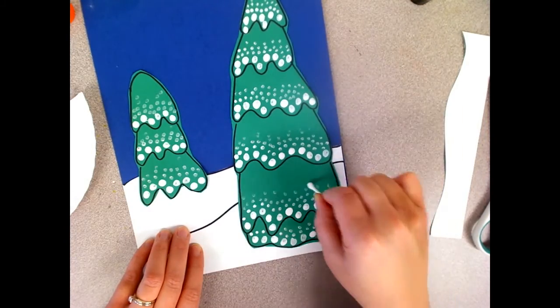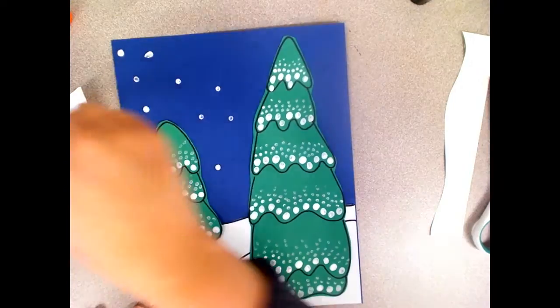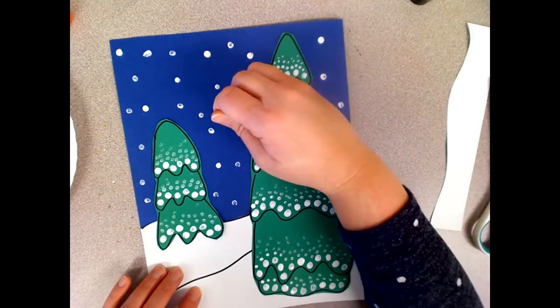You can always go back and add more to other parts of your trees. When you're finished add some snowflakes to the sky as well and if you want to make some of those snowflakes bigger you can.